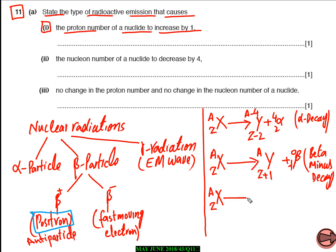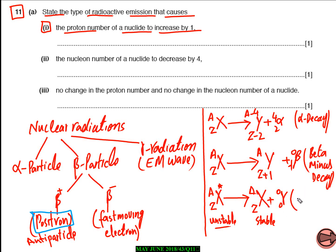The last type is gamma decay. If the nucleus X with atomic number Z and mass number A undergoes gamma decay, it is still the same element X — there is no change in atomic number and no change in mass number. The unstable nucleus, shown with a star symbol, simply becomes stable by emitting extra energy in the form of gamma radiation or electromagnetic waves.